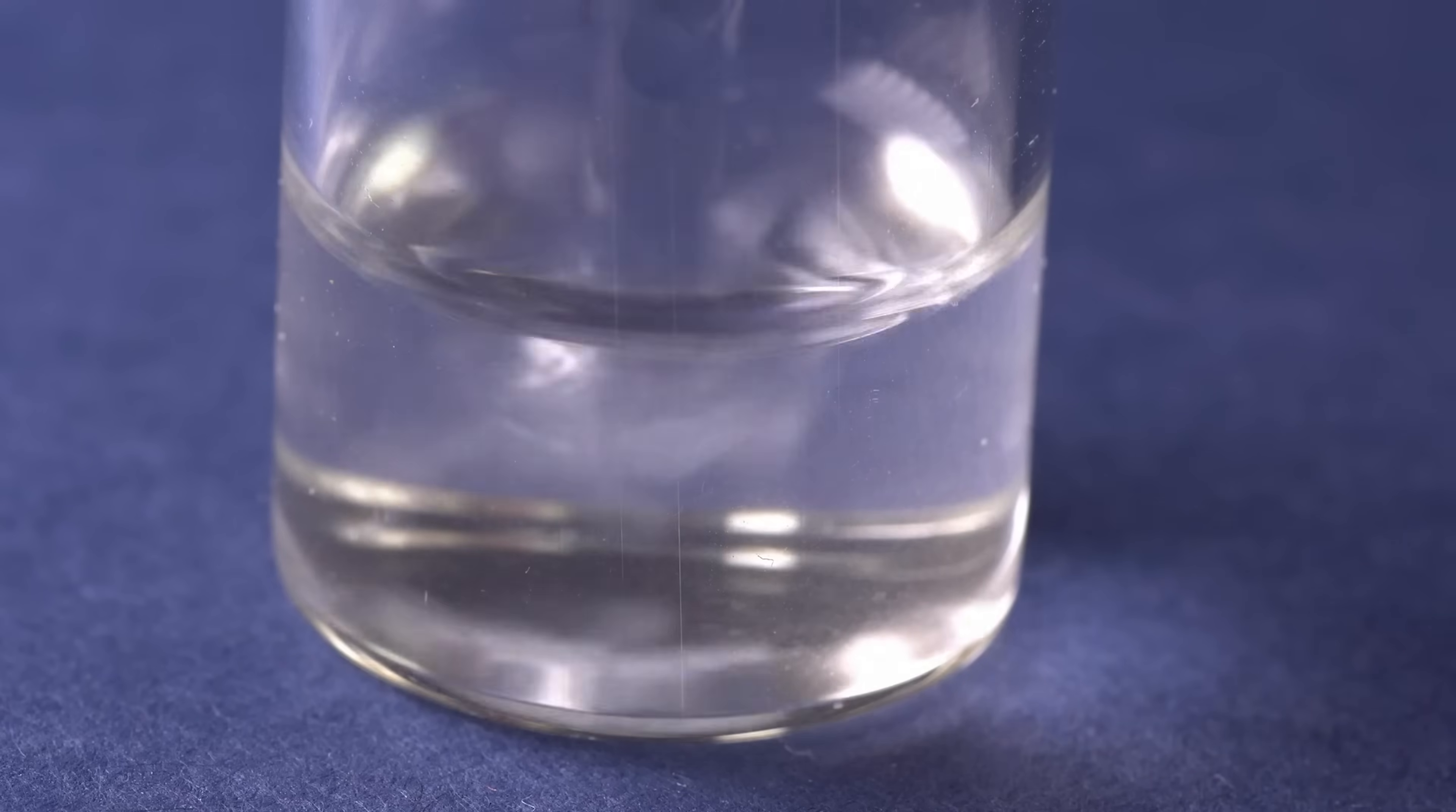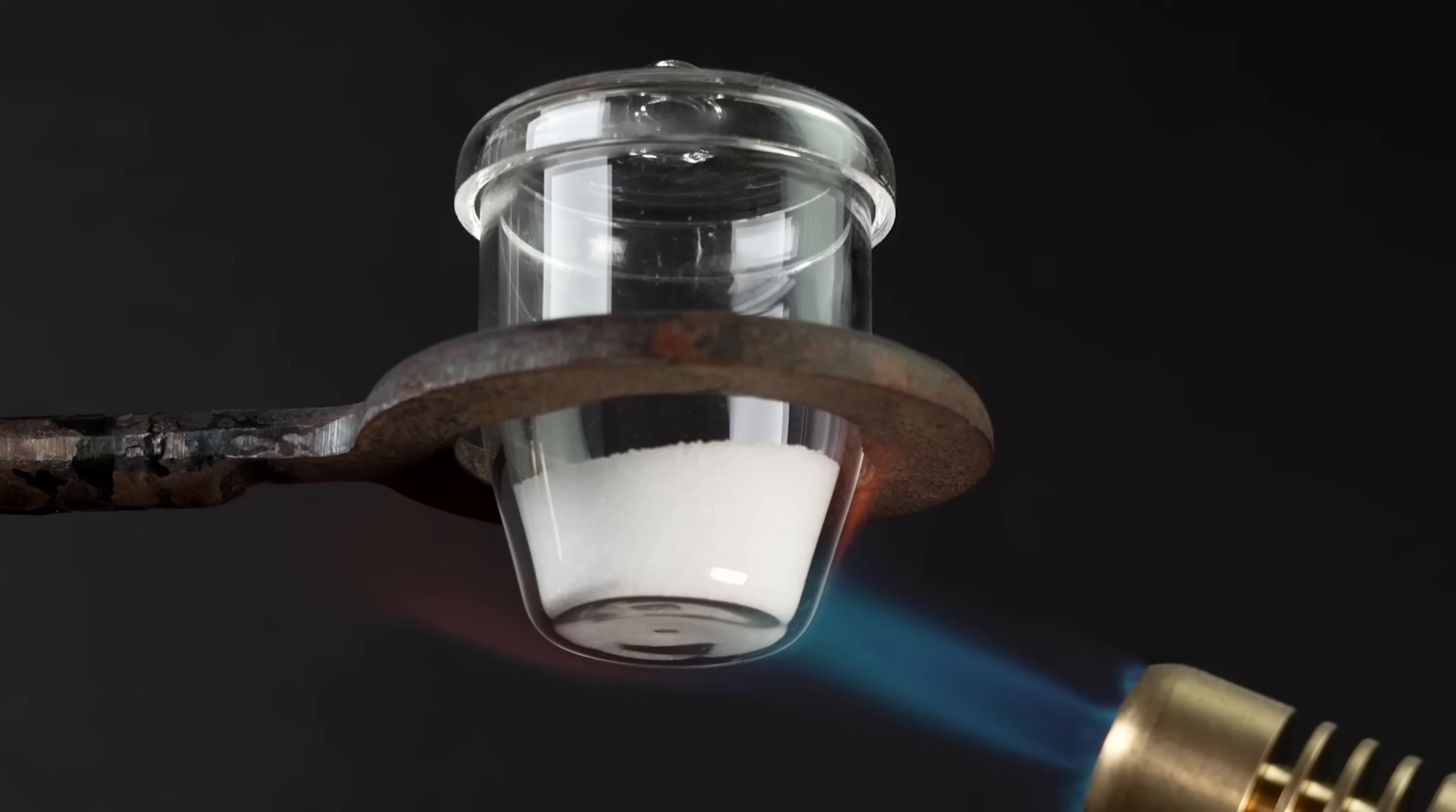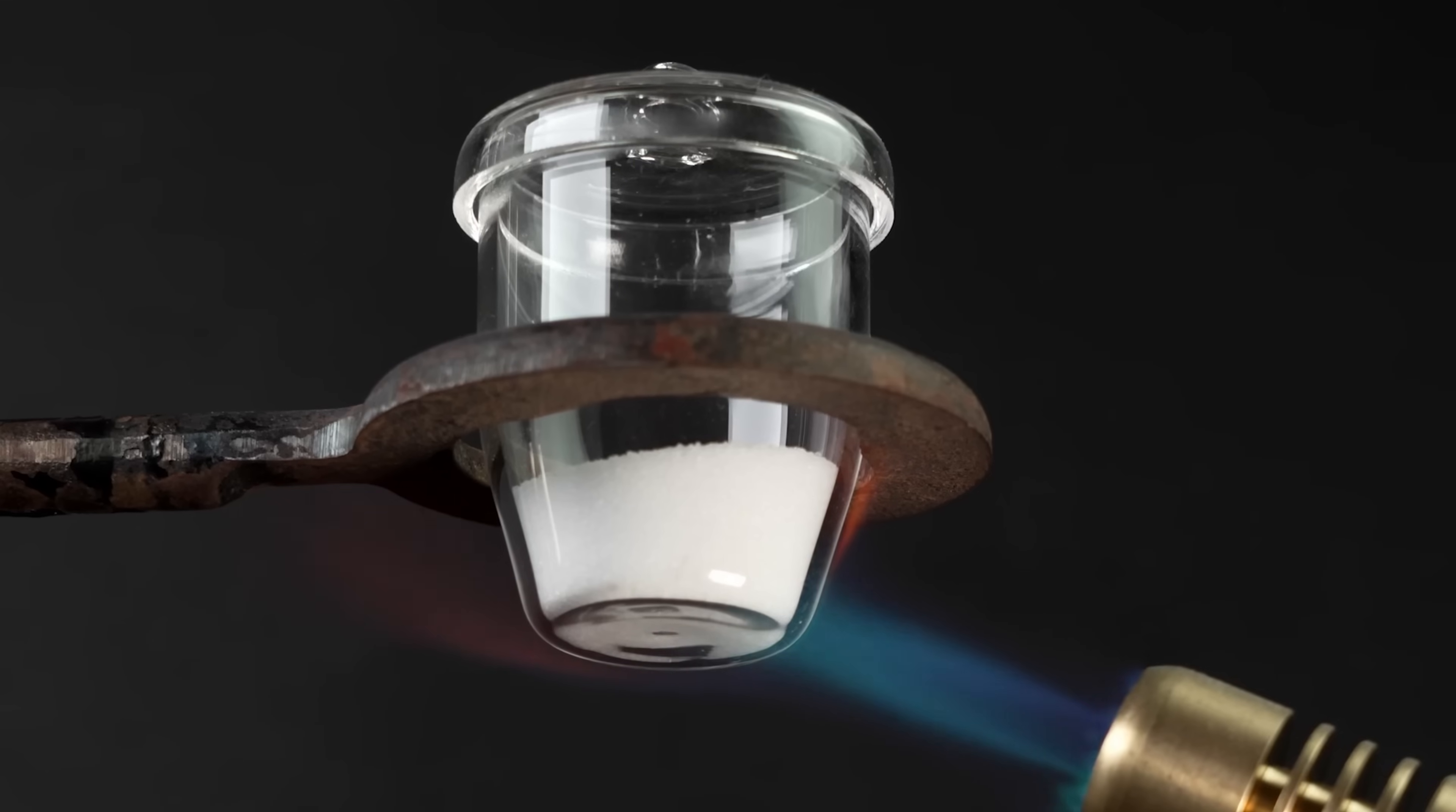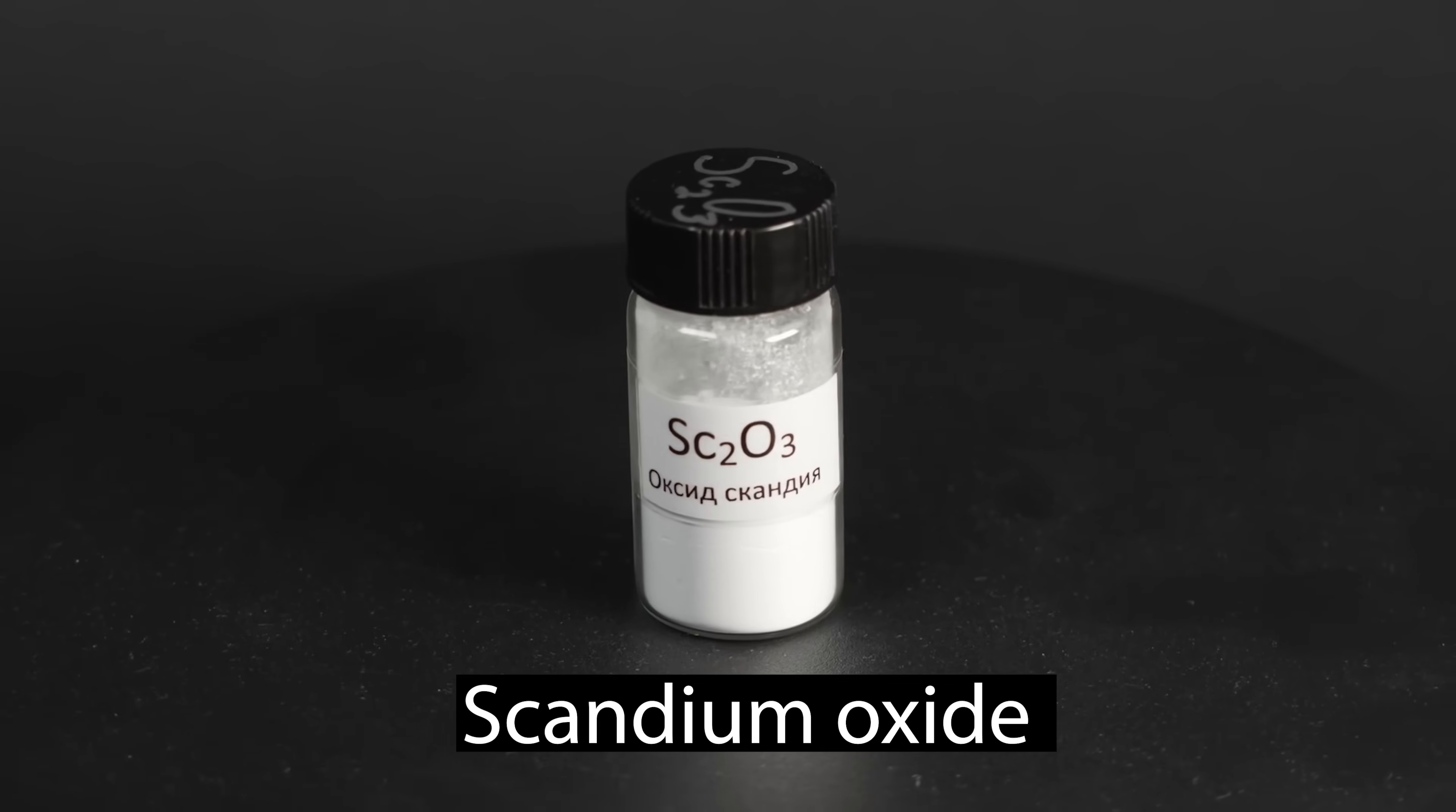After separating the upper layer, scandium oxalate can be precipitated from it by adding oxalic acid. To precipitate scandium from the aqueous layer, we should add the usual alkali, sodium hydroxide. As a result, the obtained precipitates can be dried and calcined, obtaining pure scandium oxide, which costs quite a lot, more than 10 euros per gram.